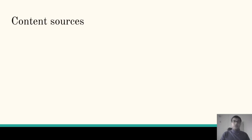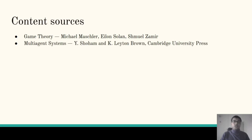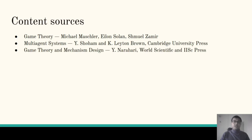Coming to the content sources, this course has benefited from several sources. The major part in the first section is the game theory book by Michael Mashler, Ilan Solan, and Shumel Zameer. The course has also had content from the multi-agent systems book by Yohab Shumham and Kevin Leighton-Brown, and also the game theory and mechanism design book by Y. Naraheri.